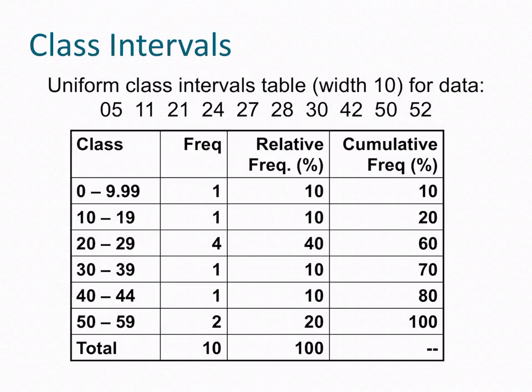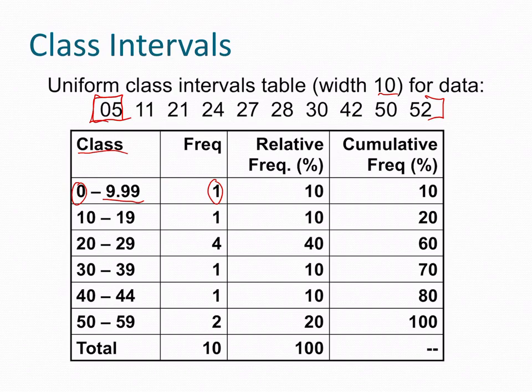So here's a uniform class interval table with the width of 10 for data that we had earlier. What we want to do is look at the class age and at the class age between 0 and 9.99. And you can see there's a frequency of 1. We know this is right here, right? This value of 5 is between this class interval and it popped up one time. So the relative frequency is 1 out of the 10. So there's your 10%. Cumulative frequency at this point is 10% as well because it's just from zero going up. Think of cumulative frequency. A great way to think about this is like your cumulative grade point average. As you keep taking classes in college, all the classes are cumulative, right? Your grade point average is cumulative over time. You can look at it at a particular semester, but overall the cumulative grade point average is from the very beginning to where you are presently.